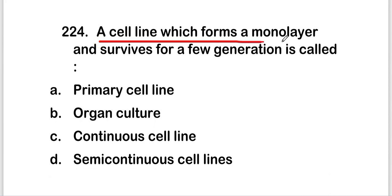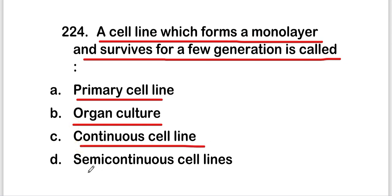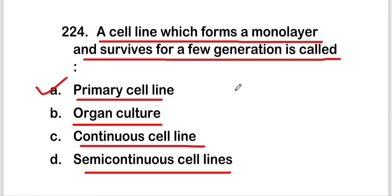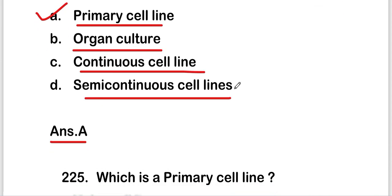The next question: a cell line which forms a monolayer and survives for a few generations is called — primary cell line, organ culture, continuous cell line, or semi-continuous cell line? The right answer is option A — primary cell line. A cell line which forms a monolayer and survives for a few generations is called a primary cell line.